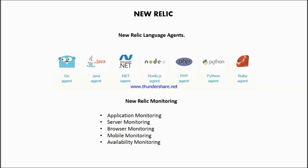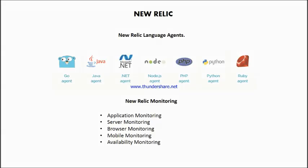The fourth level is Mobile Monitoring — if you have a mobile application, New Relic has an agent for that which you can use to monitor your mobile app. The fifth is Availability Monitoring. It is not strictly about application performance, but New Relic has a geographically distributed network of pingers that can visit a URL you specify and let you know if that URL is available or not.